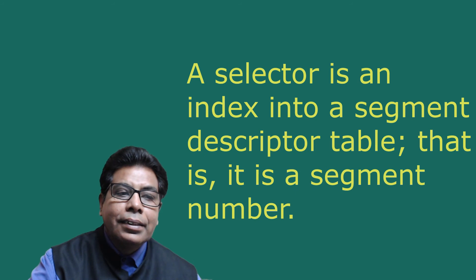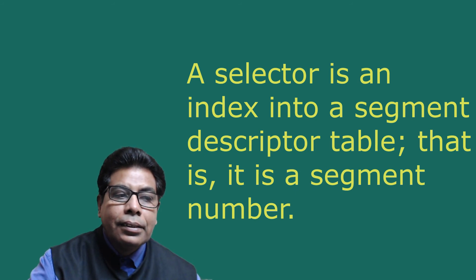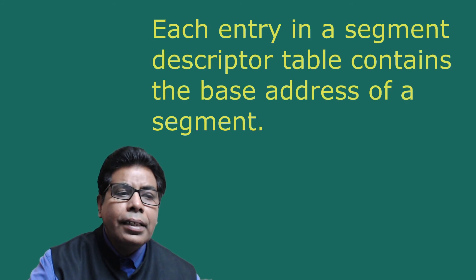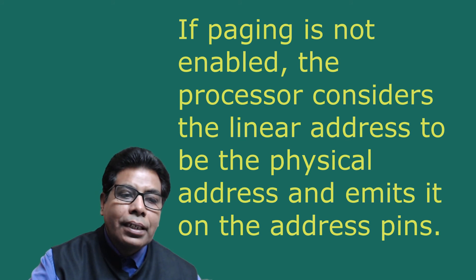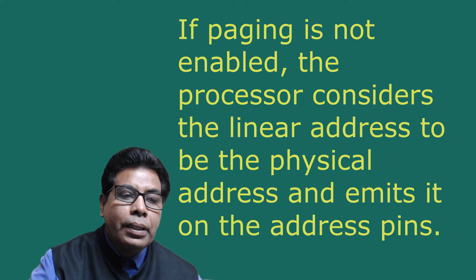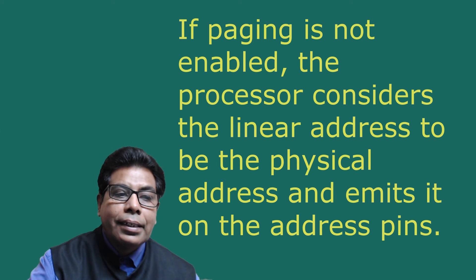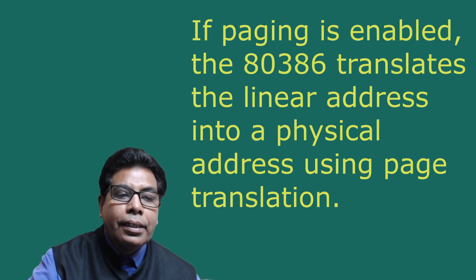In the vast majority of instructions, the selector is specified implicitly as the content of a segment register. A selector is an index into a segment descriptor table — it is a segment number. Each entry in the segment descriptor table contains the base address of a segment. The processor adds the offset to the segment's base address to produce a 32-bit linear address. If paging is disabled, the processor considers the linear address to be the physical address and emits it on the address bus. If paging is enabled, the 80386 translates the linear address into a physical address using page translation.